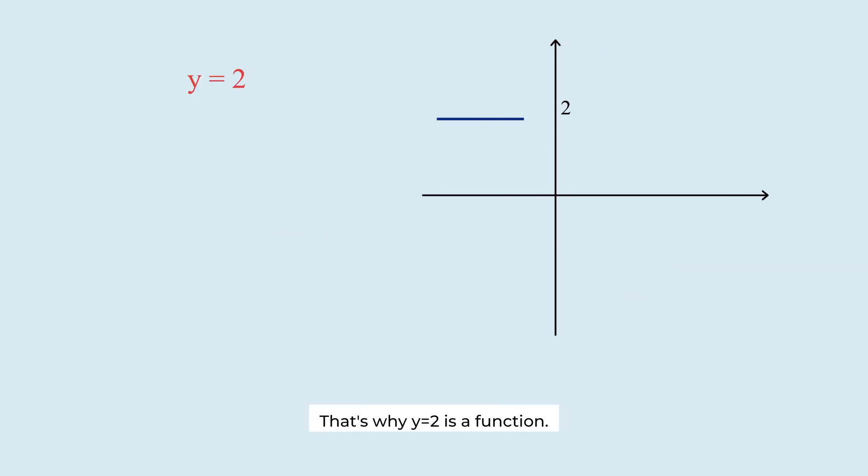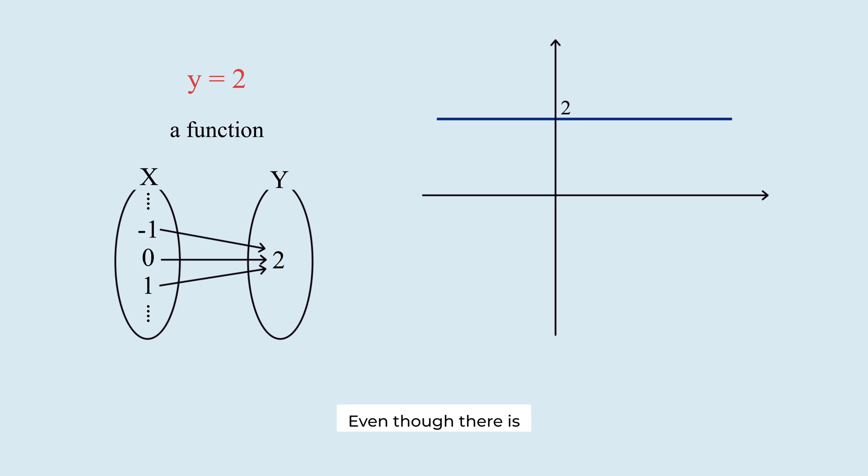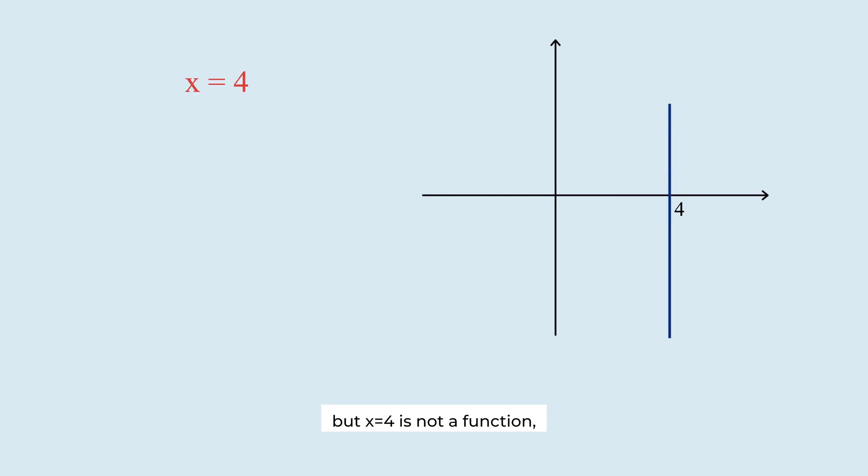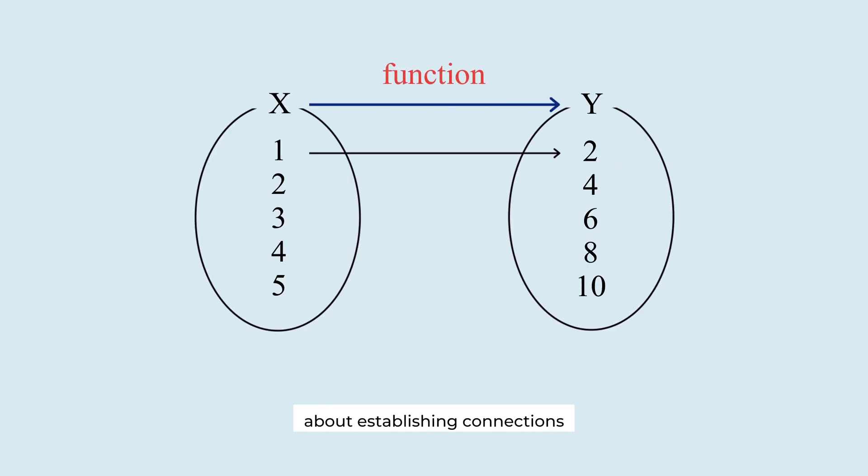That's why y equals two is a function, even though there is only one y value. Anyway, each x value corresponds to a y value. But x equals four is not a function. Because in this graph, y doesn't exist for any x other than four.